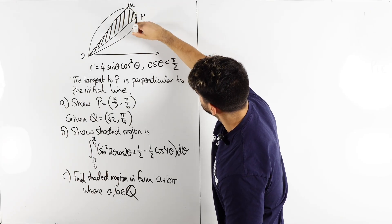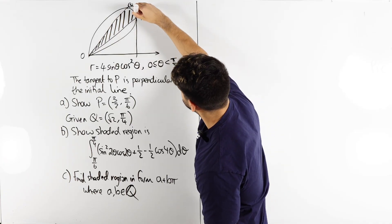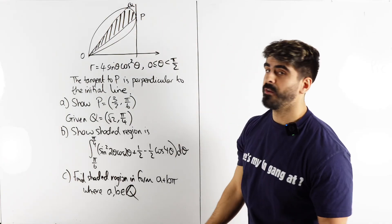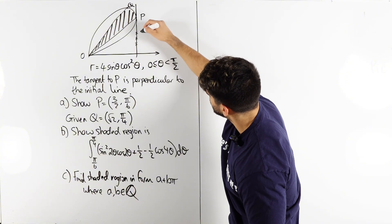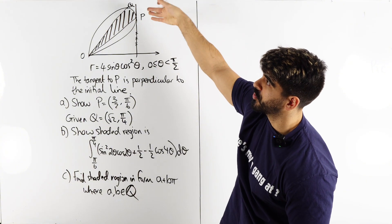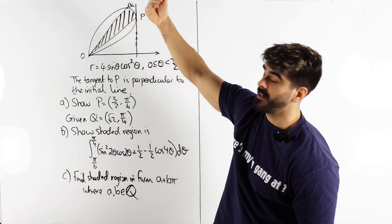Now what does it mean to be a vertical line? Vertical means that all the coordinates on this line have a fixed x value.